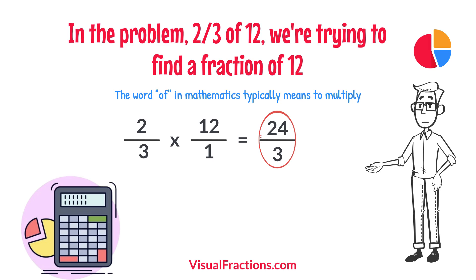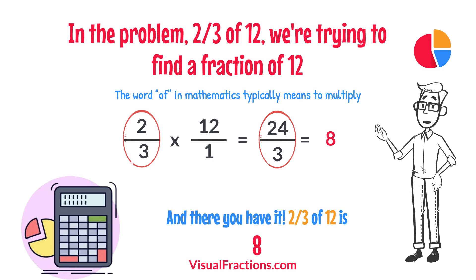To find the final answer, divide the numerator by the denominator. So, 24 divided by 3 equals 8. And there you have it. Two-thirds of 12 is 8.